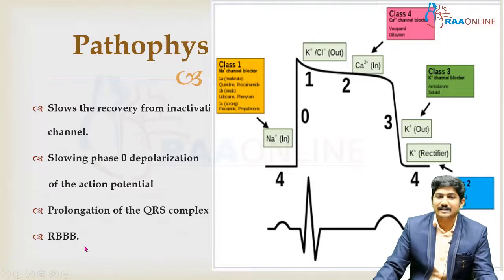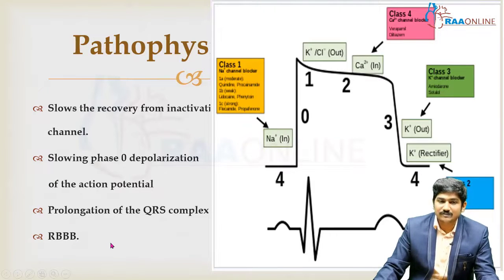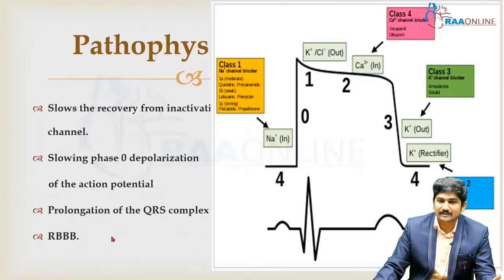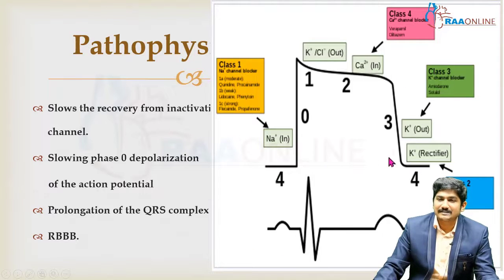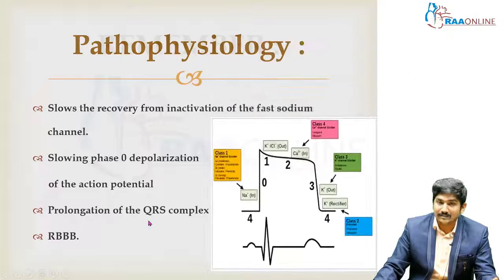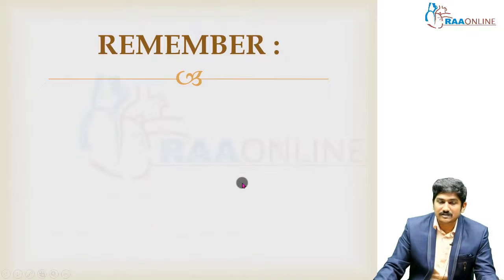I hope you got the concept clear. In other words, in a normal individual there will be a subtle delay to the right bundle branches, but it will be masked at our routine heart rate of 60 to 100. But in TCA toxicity, where the overall conduction mechanism itself is prolonged, this subtle delay to the right bundle branch will be exaggerated, so your patient can present with RBBB. Remember this very concept.